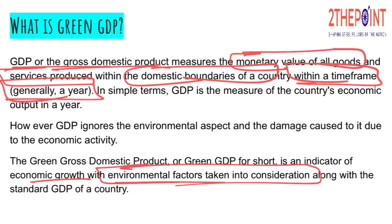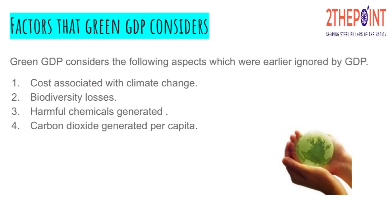There are certain factors that Green GDP considers. Some of them are the cost associated with climate change, and how much biodiversity is lost while producing goods and services. So many species are getting extinct — why? Because the climate is changing, and why is the climate changing? Because the production process is increasing the release of harmful gases into the environment.